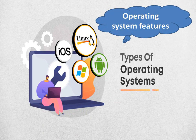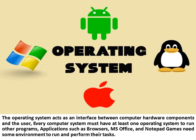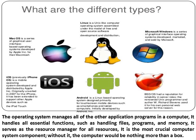Operating system features. The operating system acts as an interface between computer hardware components and the user. Every computer system must have at least one operating system to run other programs. Applications such as browsers, Microsoft Office, and Notepad need some environment to run and perform their tasks. The operating system manages all of the other application programs in a computer.